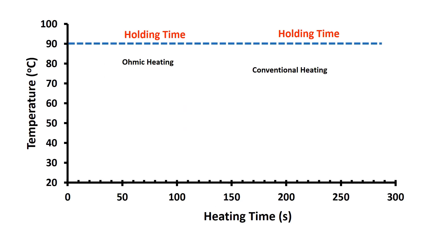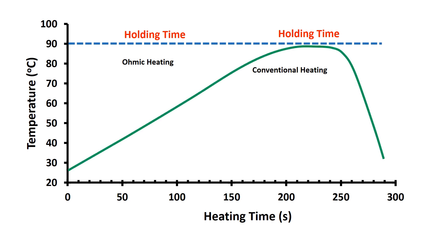As mentioned earlier, the improved quality of Ohmic heating is due to fast and uniform heating. We can understand this from a graph showing temperature as a function of heating time. In conventional heating, the processing time including come-up time is 248 seconds.